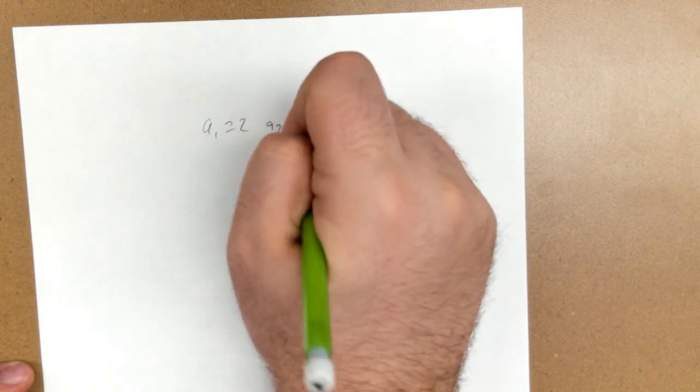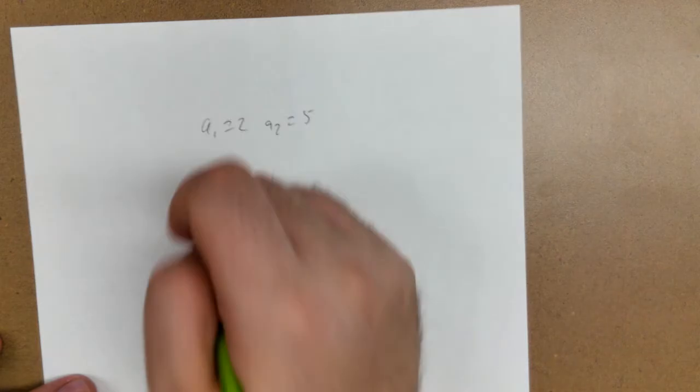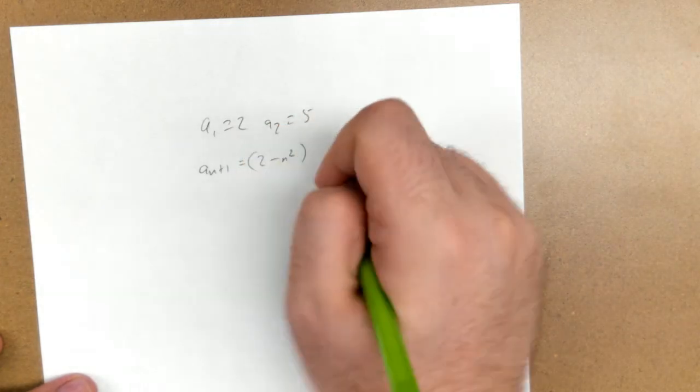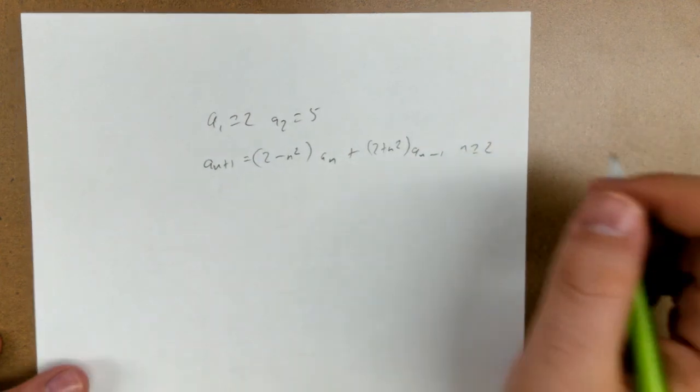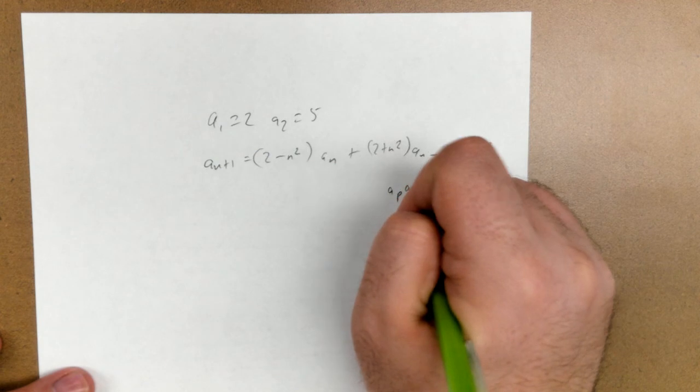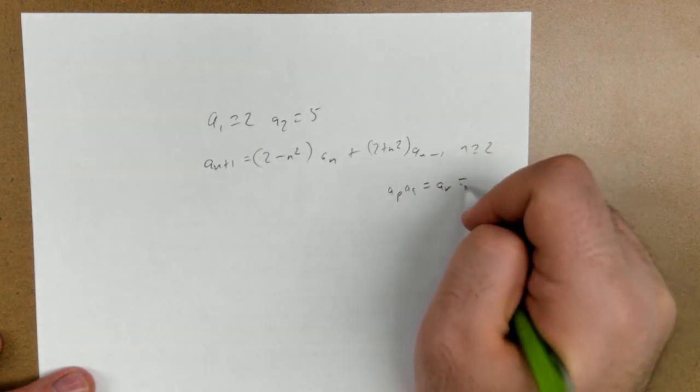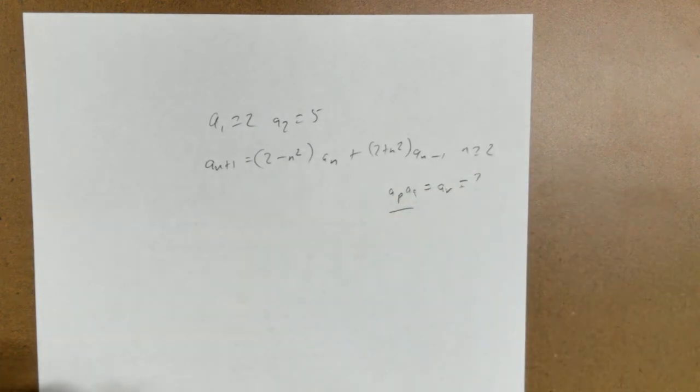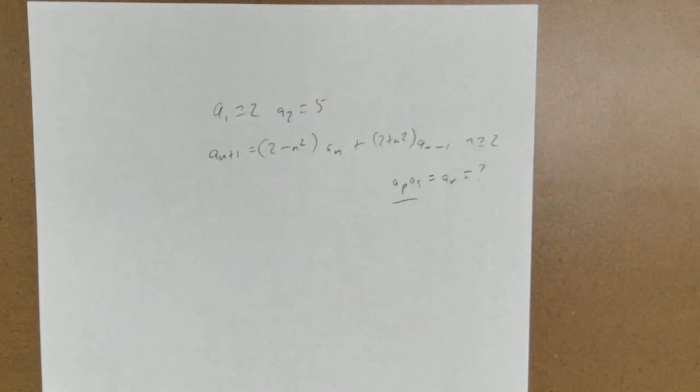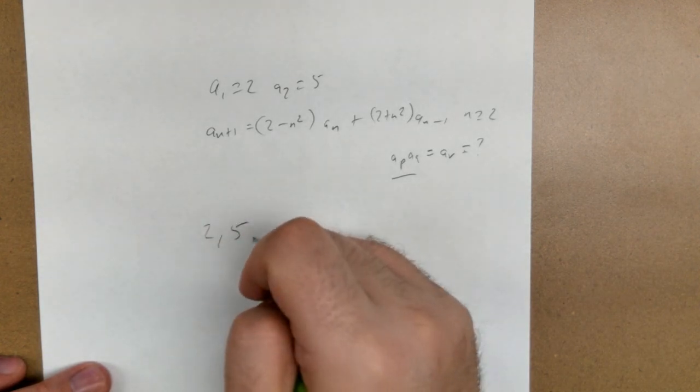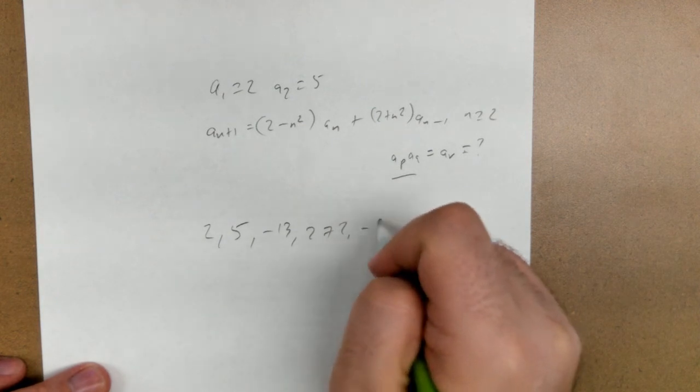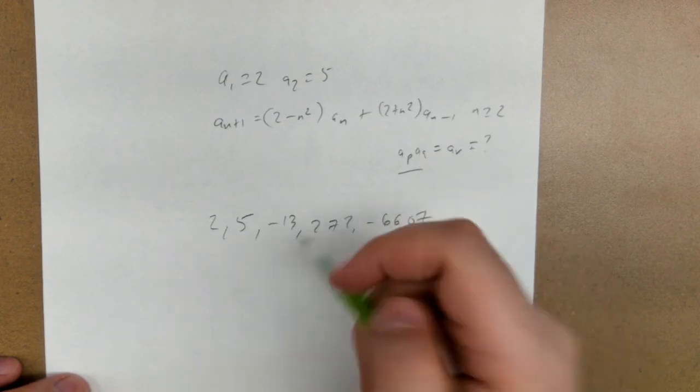All right, the last one is a bit crazy. It says you have a sequence defined by a1 is 2, a2 is 5, and I have a recursive definition, so a n plus 1 is 2 minus n squared a n plus 2 plus n squared a n minus 1, n greater than or equal to 2. And it says, do there exist indices so that you get this? So they're saying are there two numbers in here that multiply to a third number? So are there three terms in the sequence that one is a product of the other two? Okay, so I'm going to write out some terms. The first few terms are 2, 5, negative 13, 272, negative 6607, and then the 10th term is already a trillion something, so I'm going to stop there.